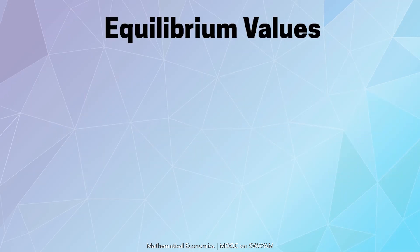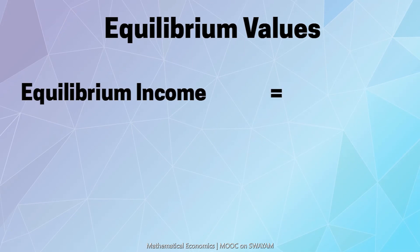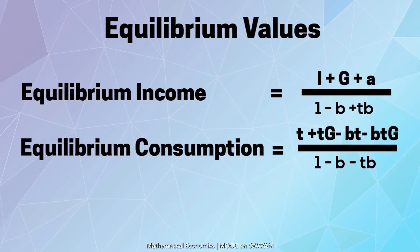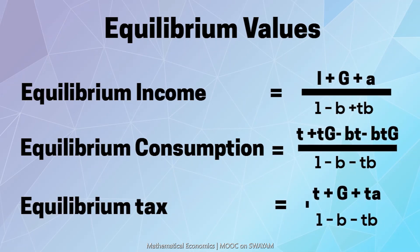We finally determine the equilibrium income, equilibrium consumption and the equilibrium tax for a closed economy. We tried to solve two important problems of an economy by using matrix algebra: first was the market model and second was the national income model. We will try to explore another important application of matrix algebra in the next week.